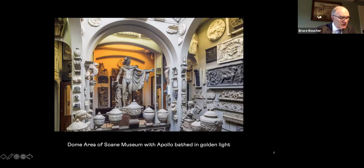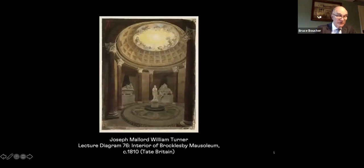Of course, this was part of what Germans would call the Zeitgeist of Soane's time. One can find similar creations in the works of Augustus Pugin, James Wyatt, and Soane's friend and fellow academician Turner, who illustrated his lectures on perspective at the Royal Academy with atmospheric depictions of interiors — such as James Wyatt's Brocclesby Mausoleum, with its own particular Lumière Mystérieuse.